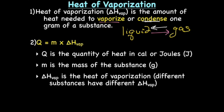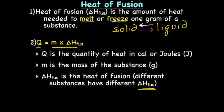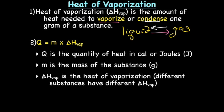We have an equation for heat of vaporization, which is exactly the same as heat of fusion except we have Q = m × ΔH_vap. So it's again Q is the quantity of heat in calories or joules, m is the mass of the substance in grams.